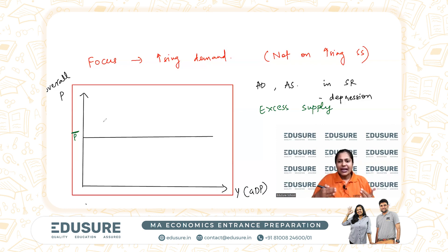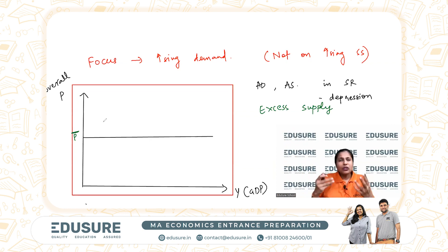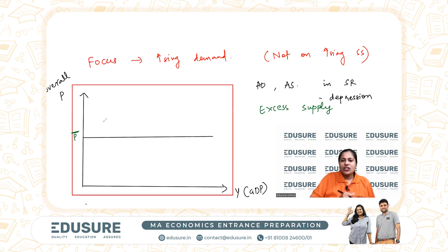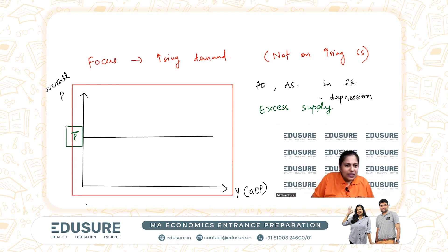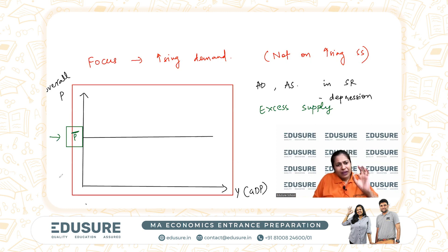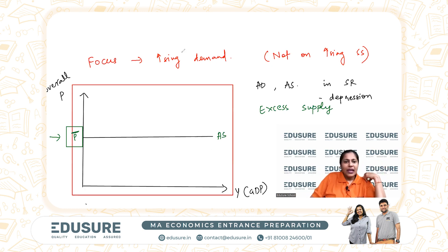Usually the aggregate supply curve is upward sloping — if you want to increase supply, you have to increase price because more expensive resources are being used. But not in the short run. During depression, the supply curve is fixed — it is horizontal at a fixed price. Keynes said that in times of depression, prices are not variable; people are happy to supply at a particular price if there is any demand.